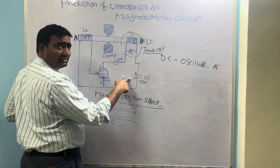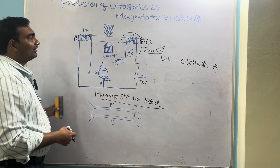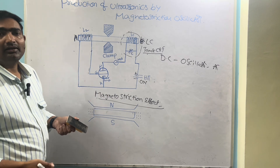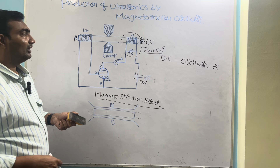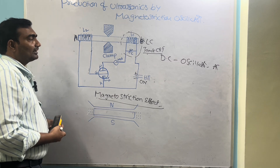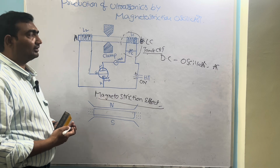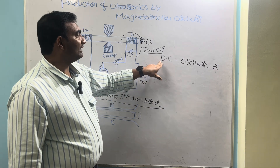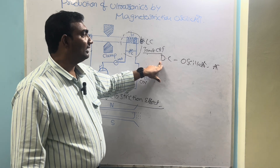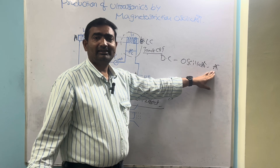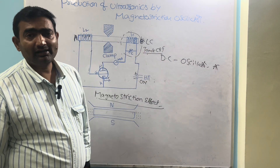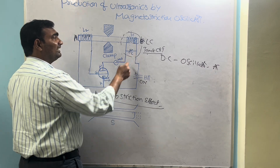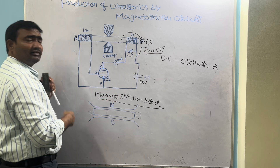There is also a DC battery. This is the basic apparatus of the magnetostriction oscillator. Now let us see the working. An oscillator takes DC current as input and converts it into an AC signal. This LC circuit forms a tank circuit.